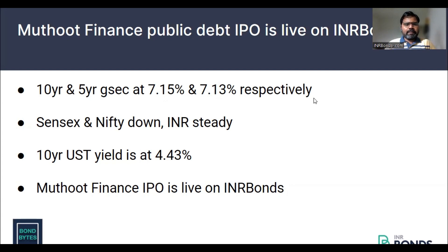However, the Fed has guided for one more 25 basis point hike before year-end. Taking cues from the global market movement, Sensex and Nifty fell sharply. Sensex declined by 1,570 points. The INR continues to hold its ground and remained flat against the US dollar. Further, in the corporate bond primary market space, Sundaram Finance issued a 2-year bond at a level of 7.89%.